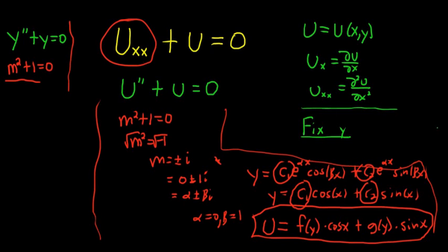Because we had u x x, we have functions of y. Conversely, if it had been, say, u y y plus u equals 0, then you would have f of x down here instead of f of y. And then you would have g of x down here instead of g of y.